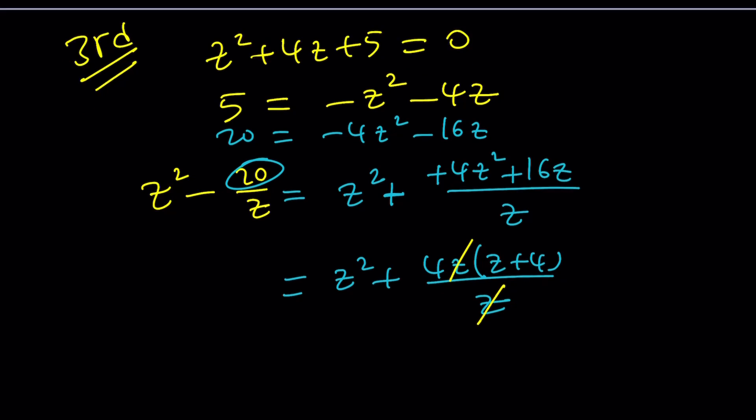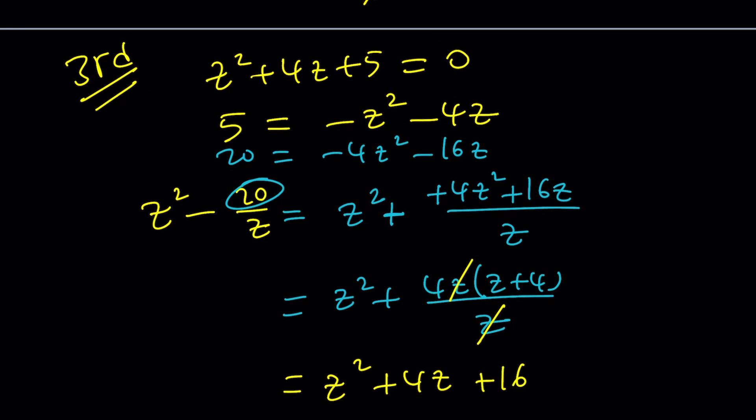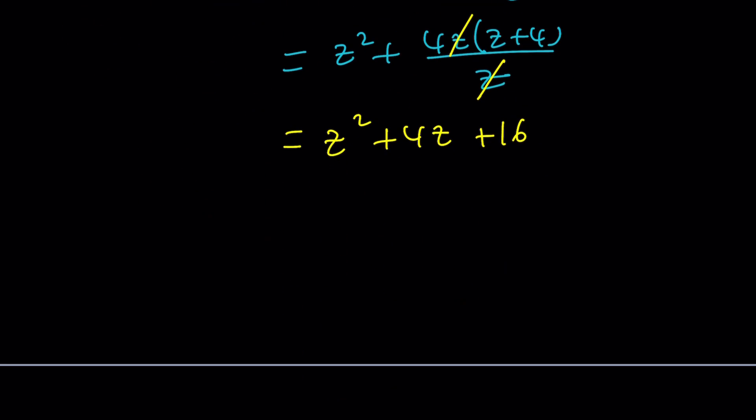Great. We end up with z squared plus 4z plus 16. Wait a minute. Aren't we supposed to get a numerical answer? Yes. But we can actually do that if you just consider the fact that z squared plus 4z plus 5 is equal to 0. What does that mean?